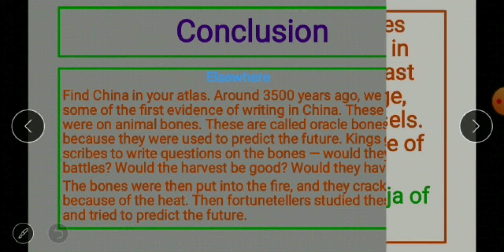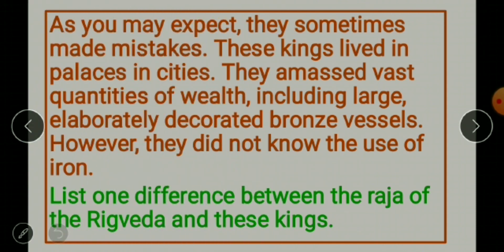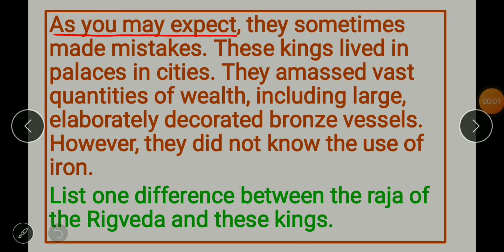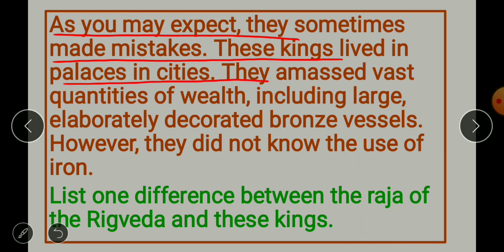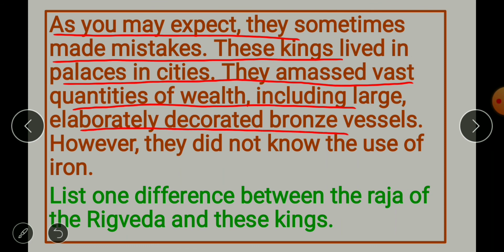The fortune tellers sometimes made mistakes. These kings lived in palaces and cities and amassed vast quantities of wealth, including large, elaborately decorated bronze vessels. However, they did not know the use of iron.